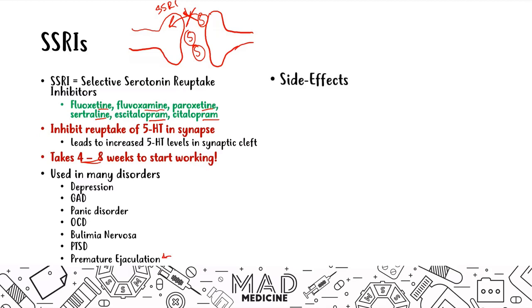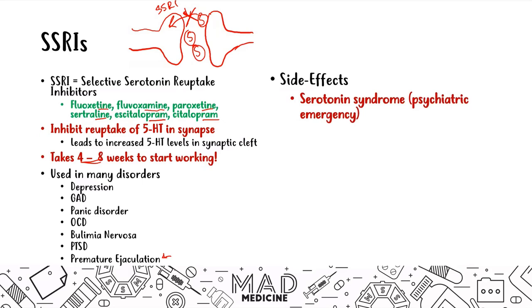There are several side effects you need to be aware of. The first and most important is serotonin syndrome — a psychiatric emergency where you have increased levels of serotonin. It can lead to symptoms similar to a carcinoid tumor, which occurs in the GI tract and releases a lot of serotonin. Symptoms include flushing, diarrhea, nausea, and vomiting — non-specific symptoms that shouldn't be happening when someone is taking an SSRI. You'll look for elevated serotonin levels. SSRIs can also lead to GI distress and weight gain.